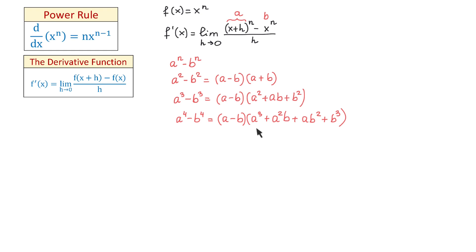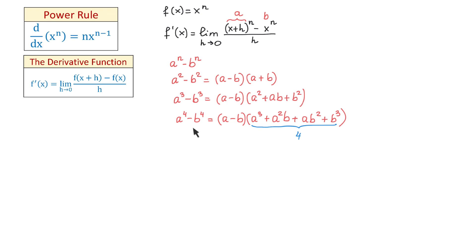Also notice that in the second parenthesis, the first term is a with an exponent that is one less than the initial exponent, and as we move to the right the exponent of a decreases. Starting with the second term, we see b to the first power, and moving to the right the exponent of b increases. The last term is b cubed. In each term, if we add the exponents we get 3. So in the first term the exponent is 3; in the second term, 2 plus 1 is 3; and 1 plus 2 is 3. Also, the number of terms in the second parenthesis is 4, the same as the initial exponent.